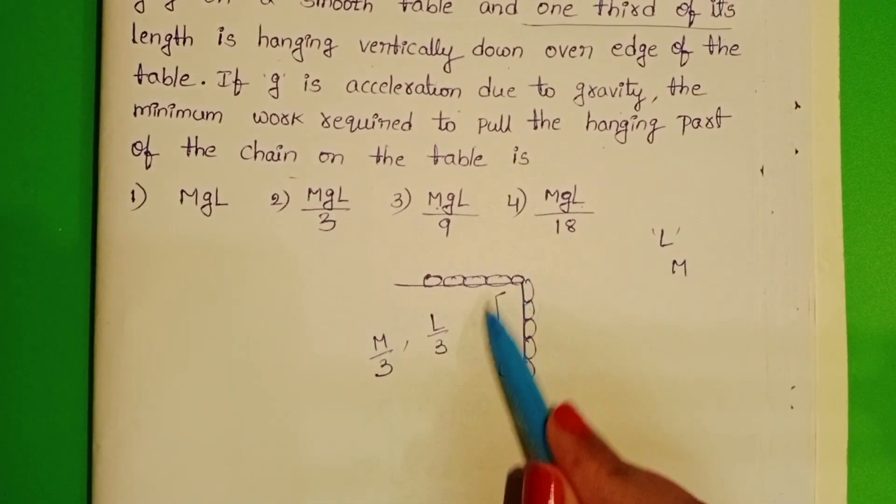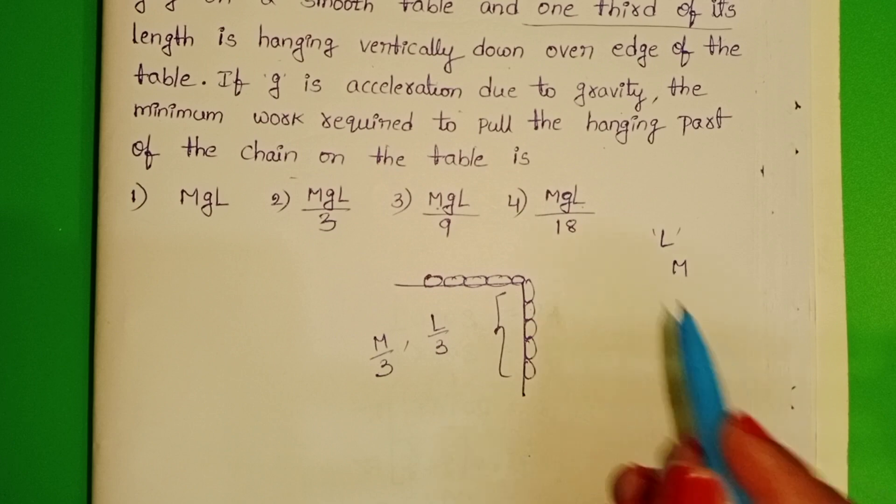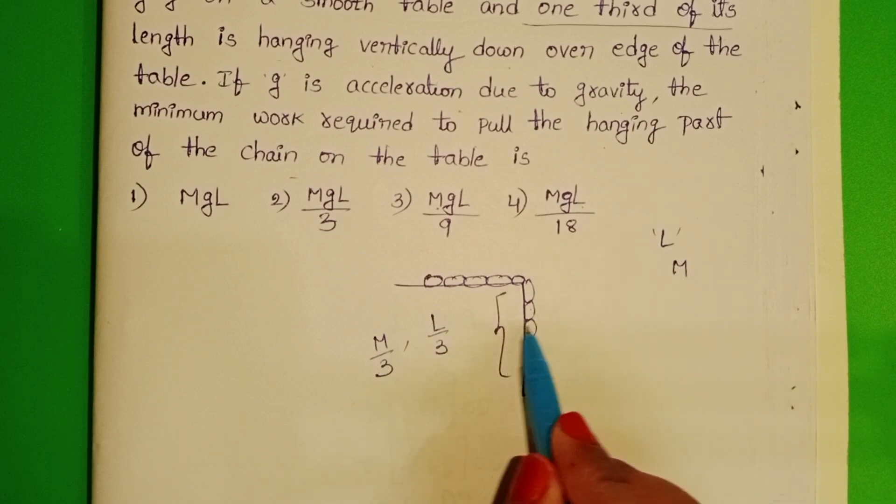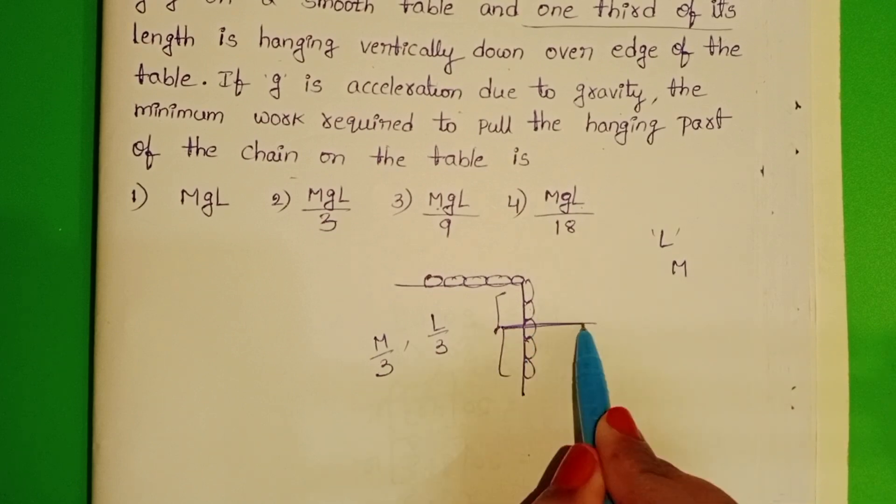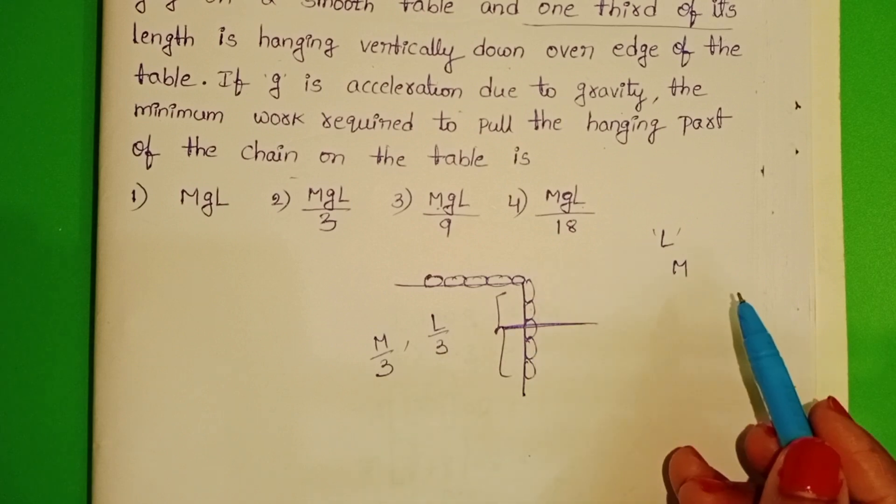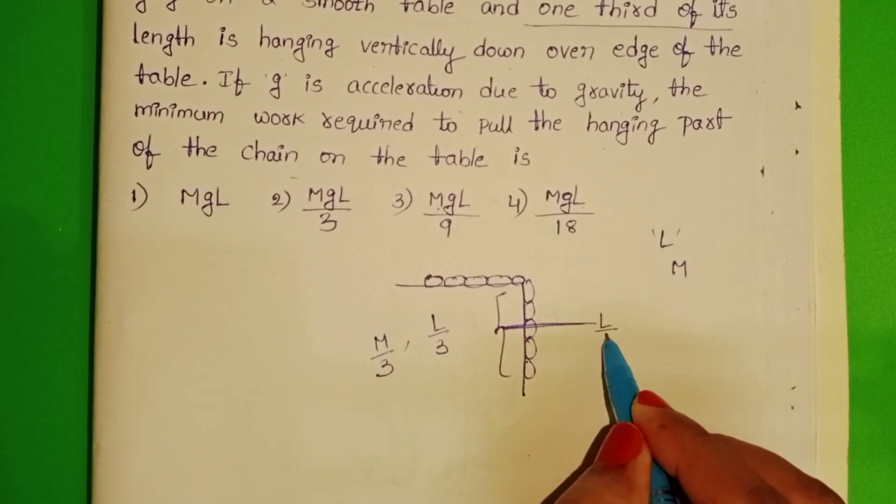Gravitational force is acting on this hanging part. Where is the center of mass balanced? Exactly half of the length of the hanging chain, L by 6.